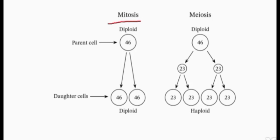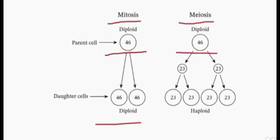In mitosis, a diploid parent cell produces daughter cells which are also diploid, so the daughter cells are exactly identical to the parent cells. But in meiosis, the parent cells are diploid and the daughter cells are haploid, so the daughter cells are not identical to the parent cell nor to each other — they are unique.